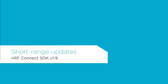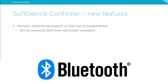Moving to short-range updates: for the SoftDevice Controller, periodic advertising was added as experimental in version 1.8. Now it has been taken out of experimental and will be covered by the QDID for the SoftDevice Controller embedded in NRF Connect SDK version 1.9. Once certification is completed, the QDID will be uploaded to the Info Center. Periodic advertising is future-looking, with main use cases in direction finding and audio, and additional features will be implemented in coming releases.